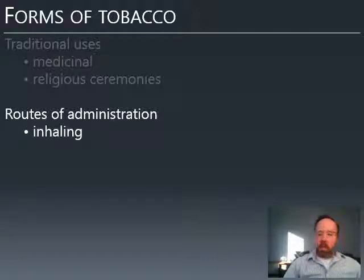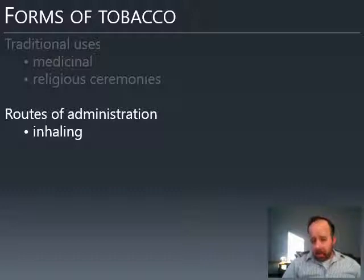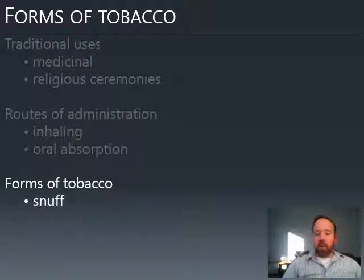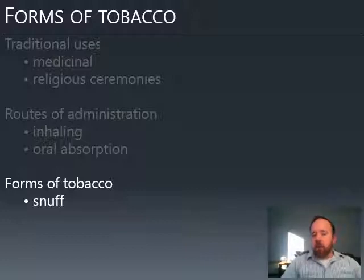There are different forms of tobacco use, and these determine the route of administration. Inhaling is obviously a very popular one — it's the most common way of using tobacco today, but that wasn't always the case. The other way is absorption orally, not by swallowing the tobacco but by holding it in the mouth. Snuff, for example, is powdered tobacco that is usually snorted so that the nicotine is absorbed through the linings of the nose — the same way cocaine is absorbed.